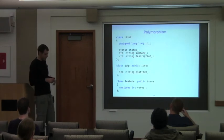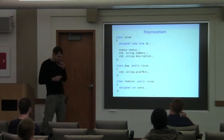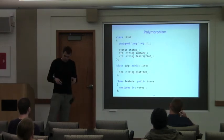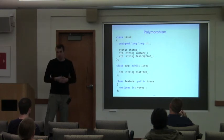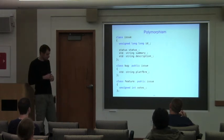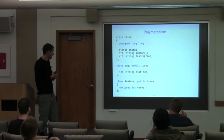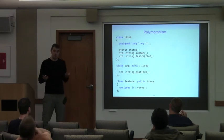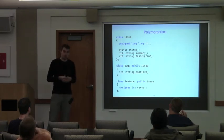Sooner or later we'll run into a need to persist a polymorphic class hierarchy. For example, in our bug database we might have two kinds of issues.